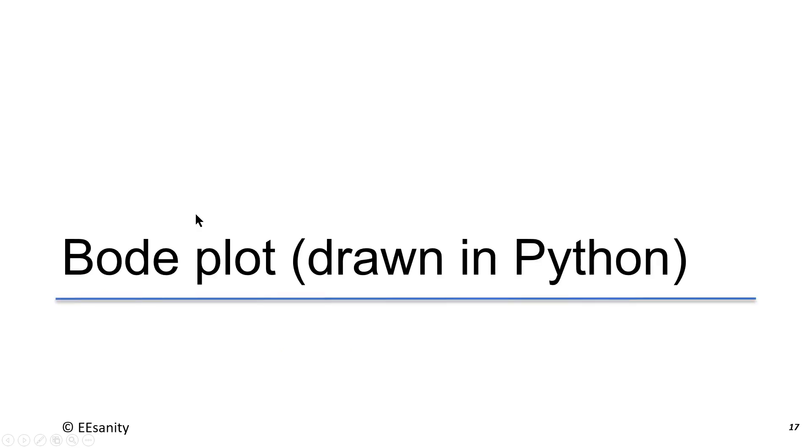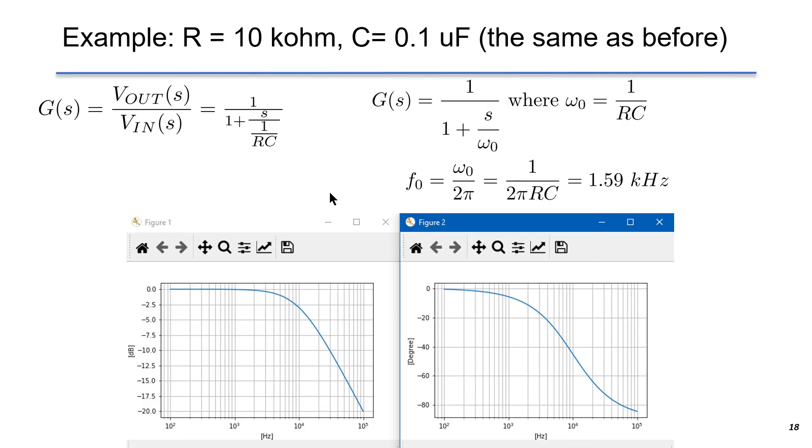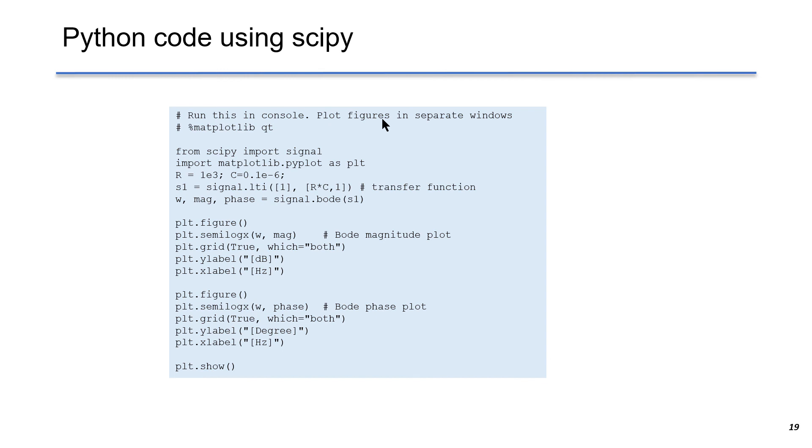We can also use Python. We use the same parameter as we use in MATLAB. By using Python coding, we can draw the same Bode plot. This is the magnitude plot, and this one is the phase plot. This is the Python code using SciPy to draw the Bode plot.